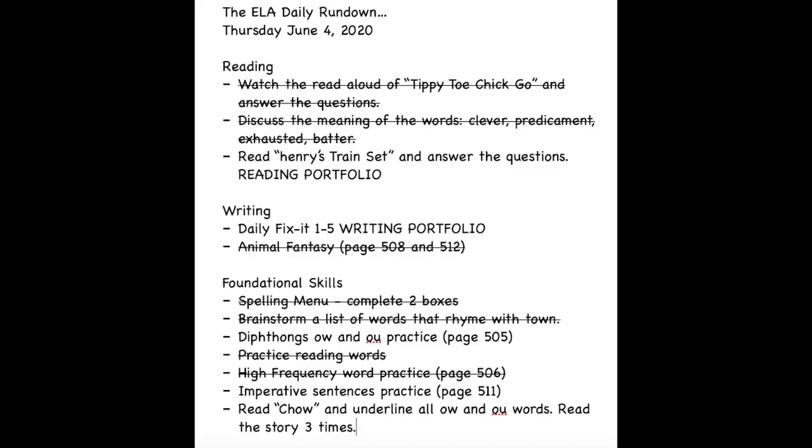The ELA daily rundown, Thursday, June 4th, 2020. Today in reading, we're not going to do our usual read aloud of a story. We're going to skip that and skip the meaning of specific words. Instead, we're going to read Henry's Train Set and answer the questions that'll be right here on screen for you to follow along. It's a quick story with a number of comprehension questions after it, getting them to remember the story and critically think about it.